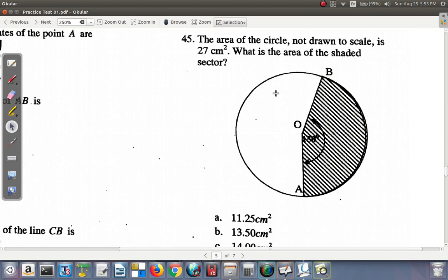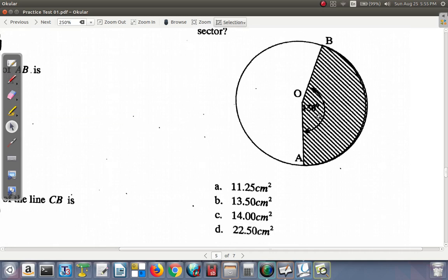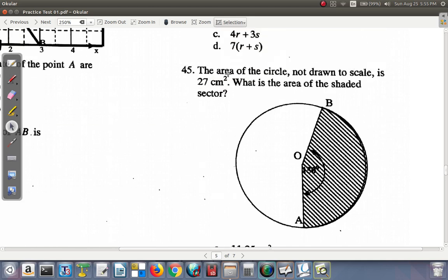Question 45. The area of the circle, not drawn to scale, is 27 centimeters squared. What is the area of the shaded region? Is this showing 100 and it seems like probably 150 degrees or something? Not very clear. But anyway, if it's 150 degrees, then it's less than 180 degrees.